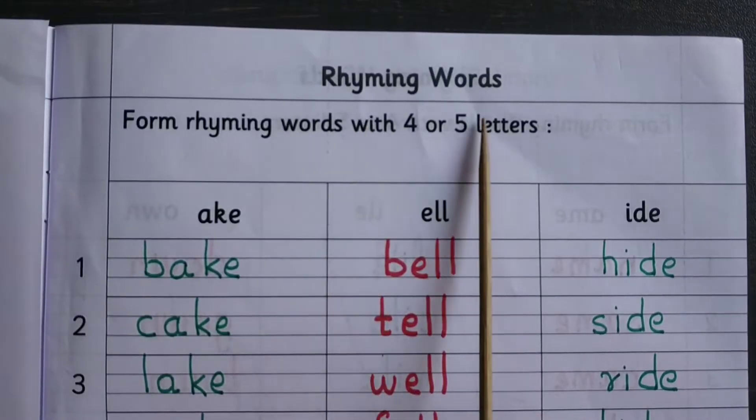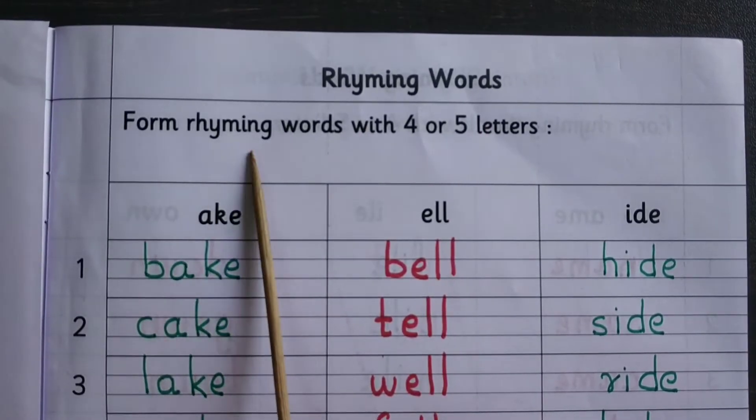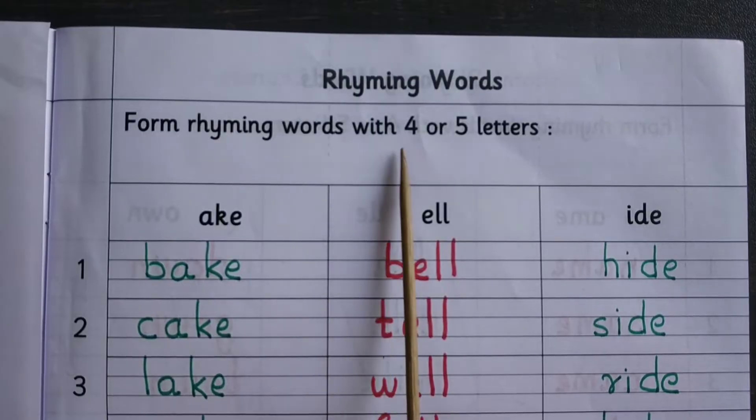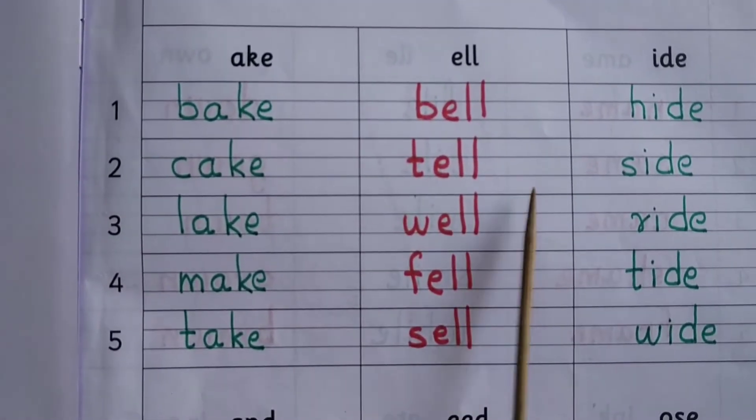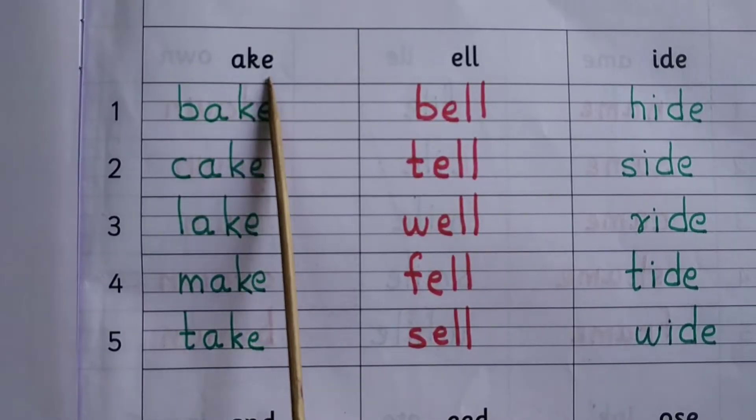Rhyming words. Form rhyming words with four or five letters. A-K-E: